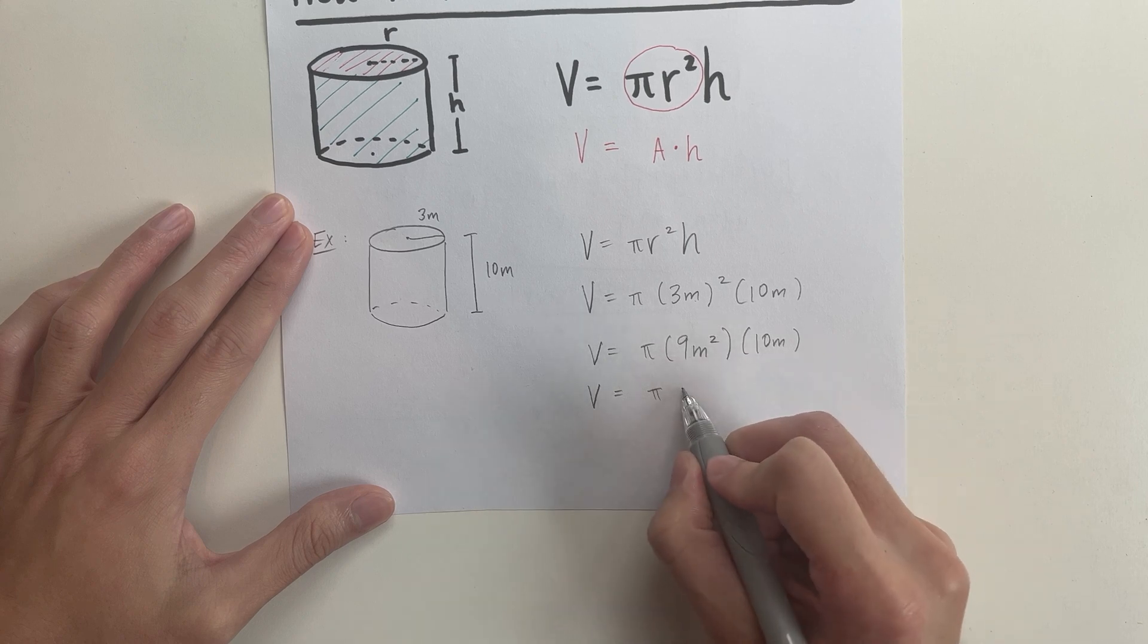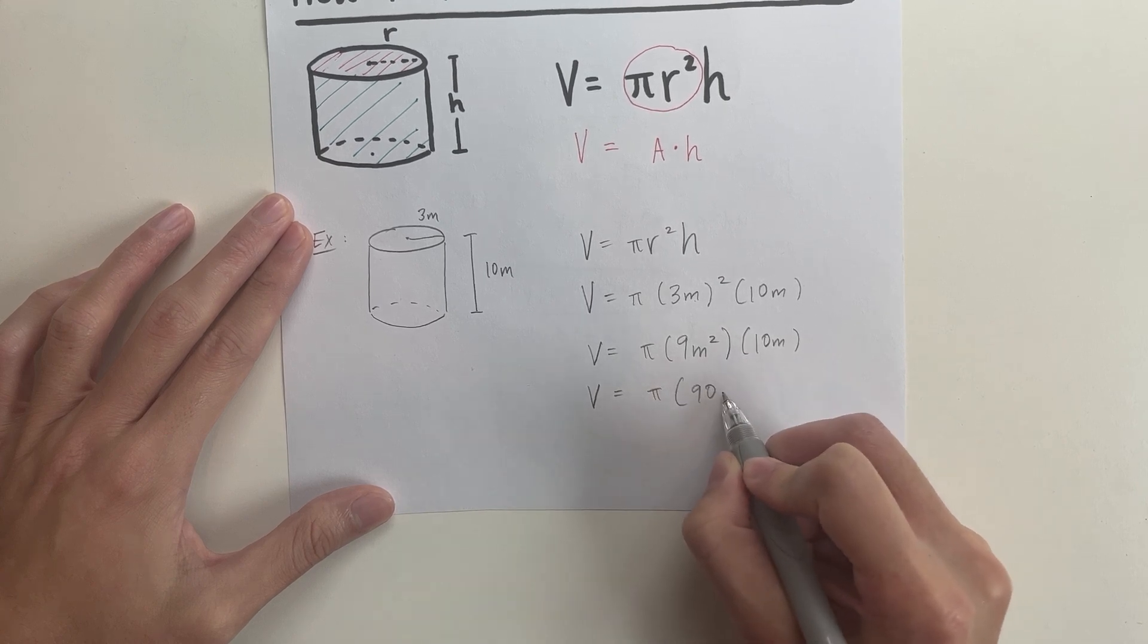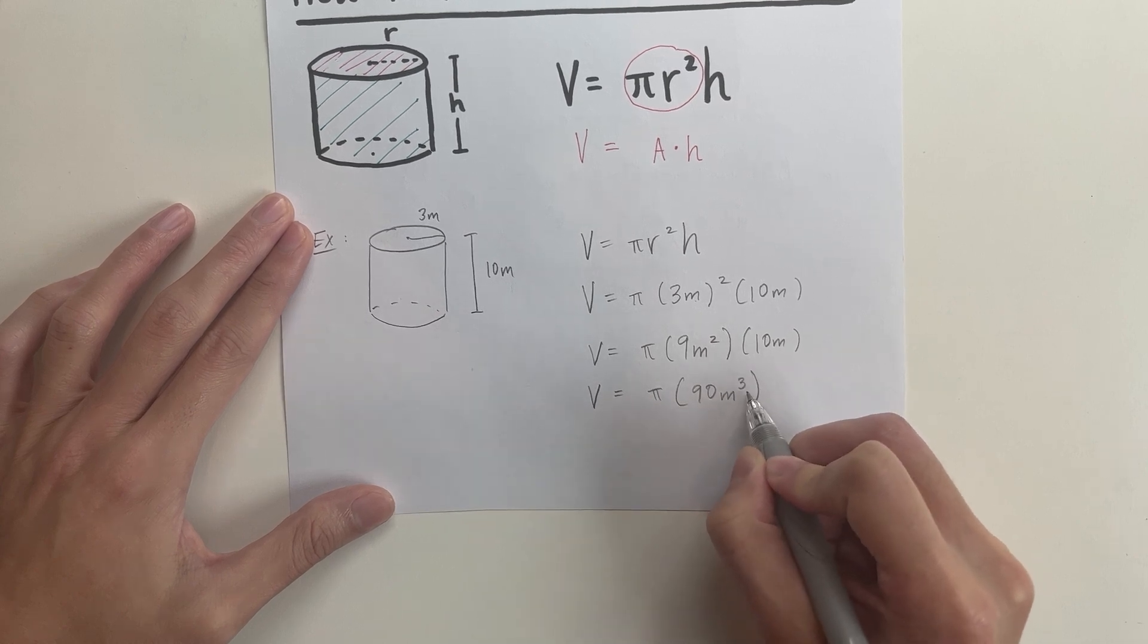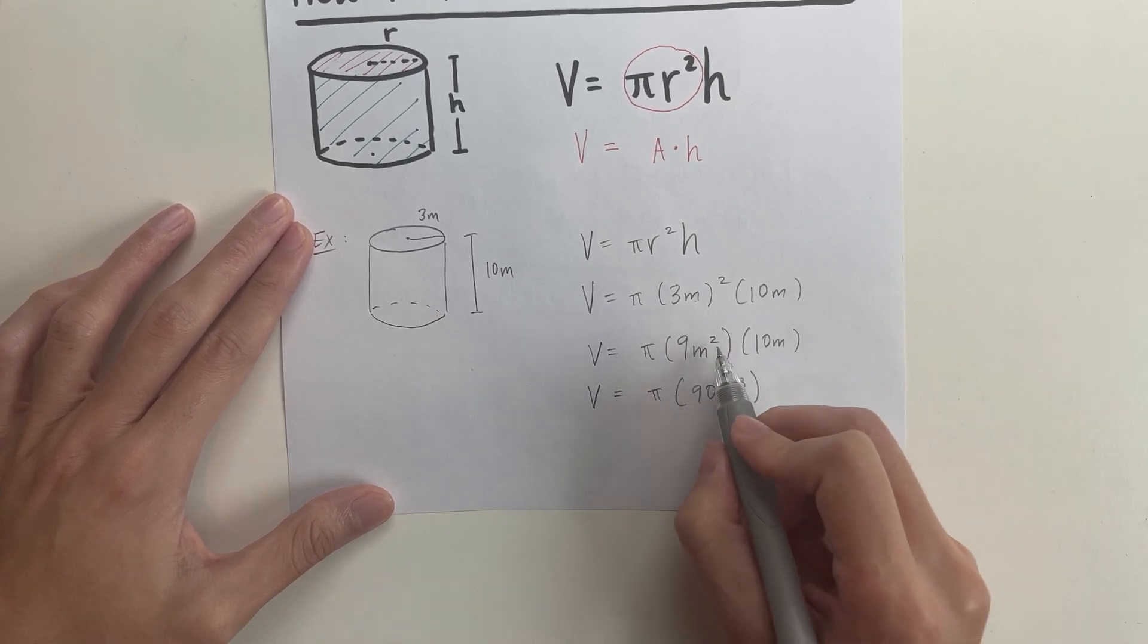So the volume equals pi. So this is going to be 9 times 10, which is 90. And meters squared times meter is going to be meters cubed, or to the third power, because you would add it.